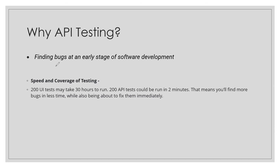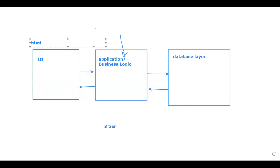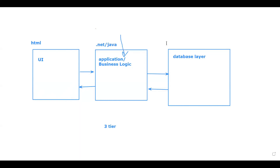That means you find more bugs in less time and can fix them immediately. It is much easier to fix a bug at the business logic layer than at the UI layer, because fixing at the UI level involves many things. Business logic layers are developed in languages like .NET or Java; the database layer uses Oracle or SQL Server. Testing at the API level makes it easier and faster to fix bugs, with better test coverage overall.